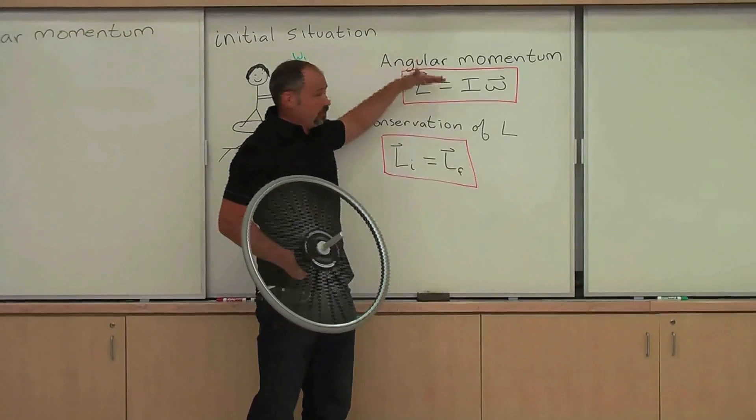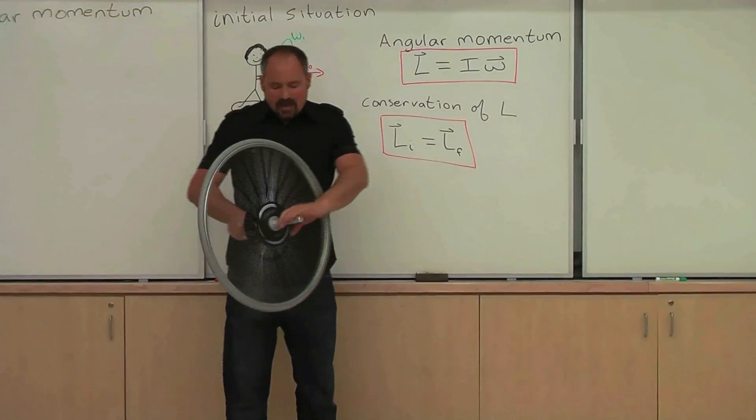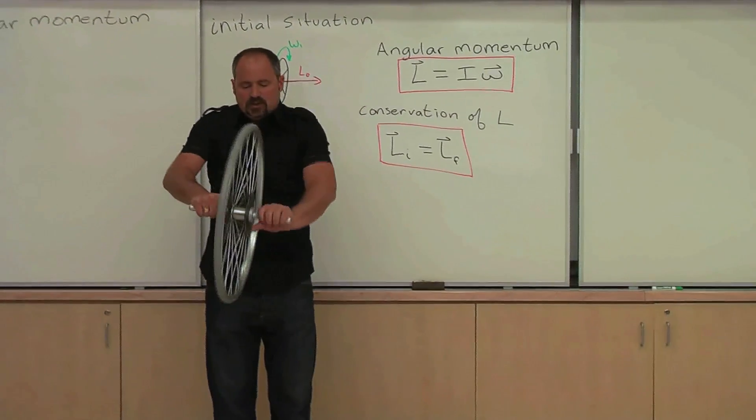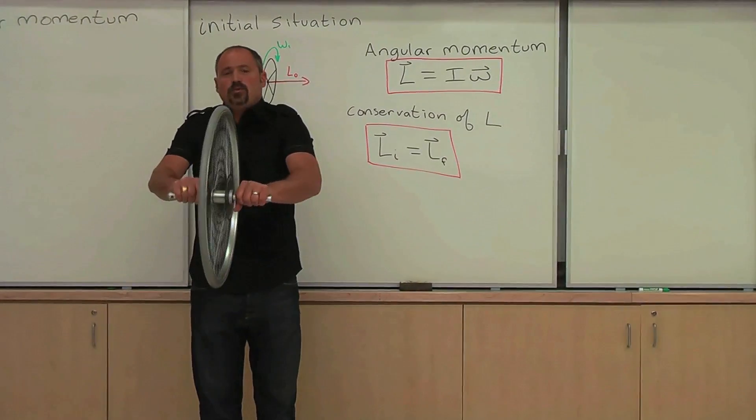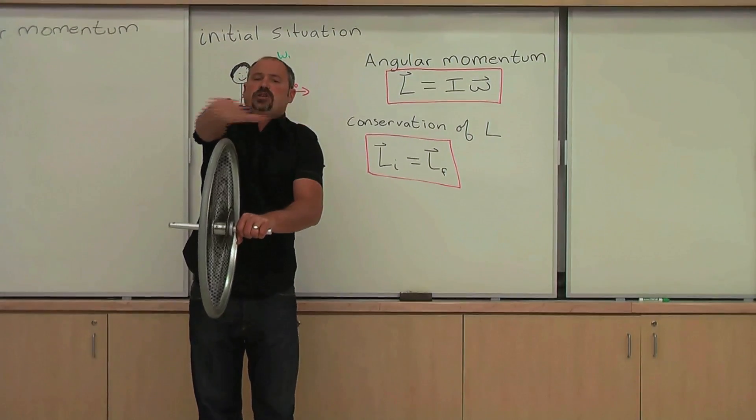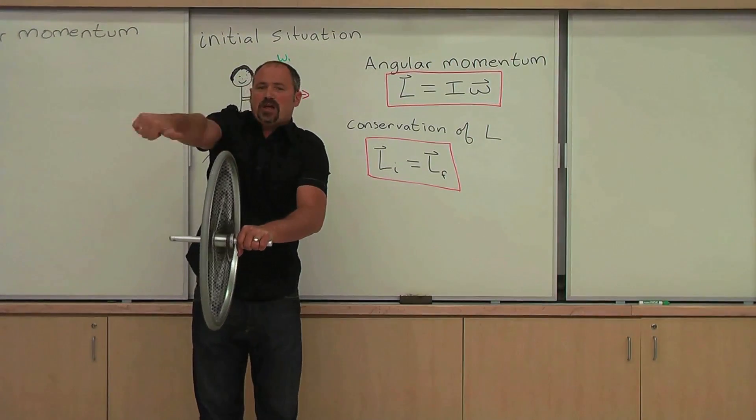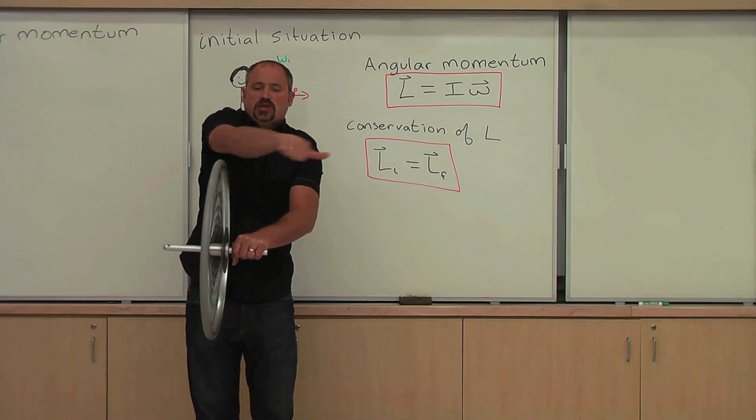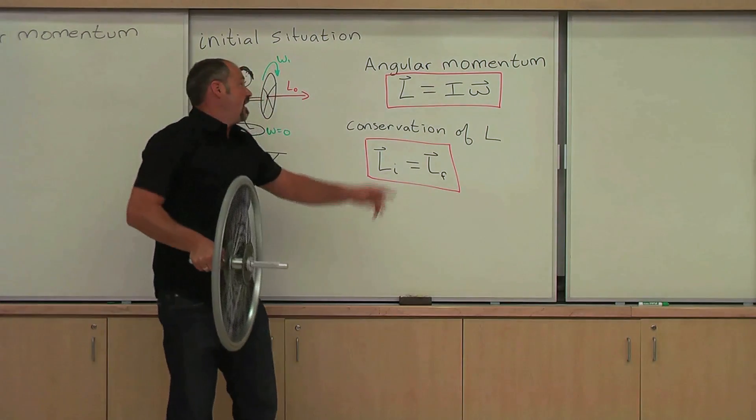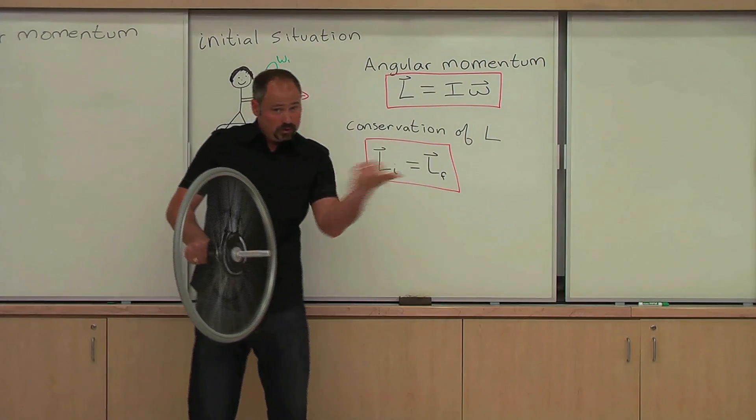It's a vector, that's why I put the little arrow on top. And if it's spinning this way, we use the right-hand rule to get the direction of the angular velocity. So the angular velocity is pointing this way, and therefore the angular momentum is also pointing that way.